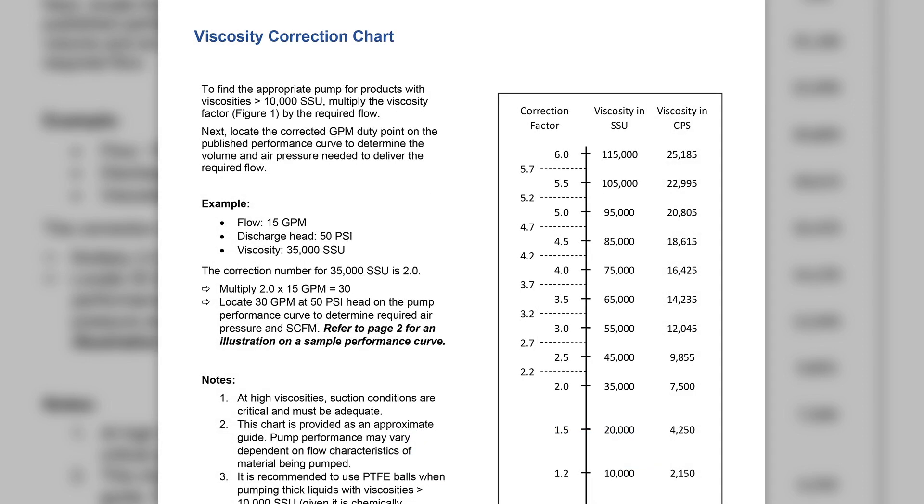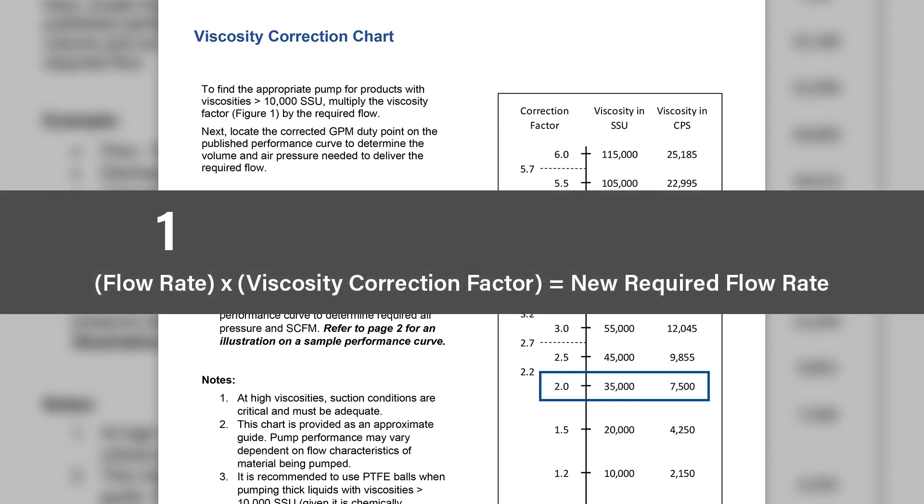In order to obtain the same level of performance as water for the required flow rate of 15 gallons per minute, multiply the flow rate by the viscosity correction factor, in this case, 2.0. The new required flow rate for a viscous product of 7500 centipoise is 30 gallons per minute.